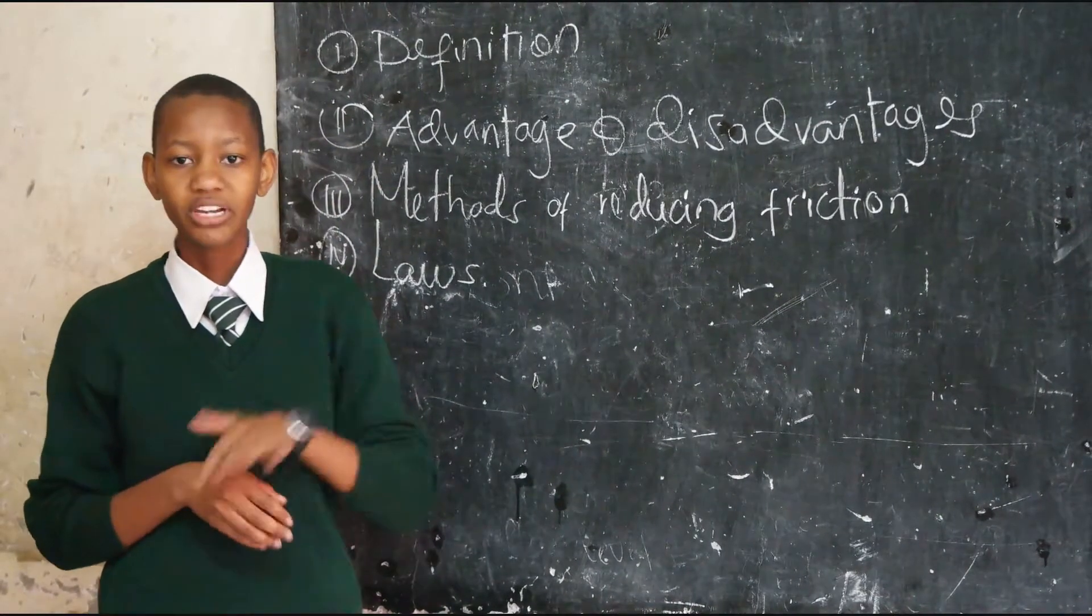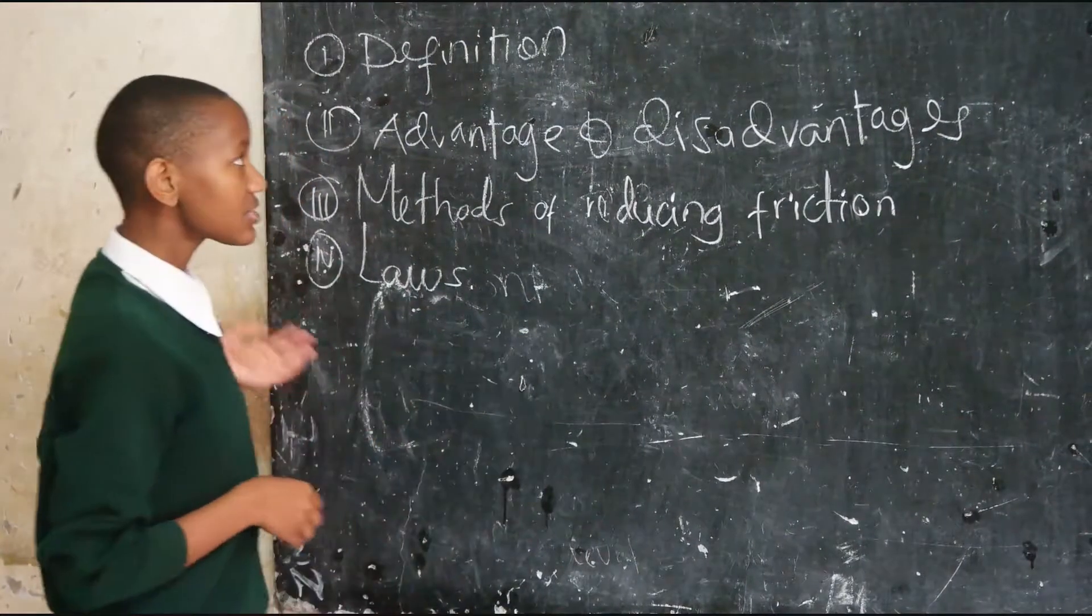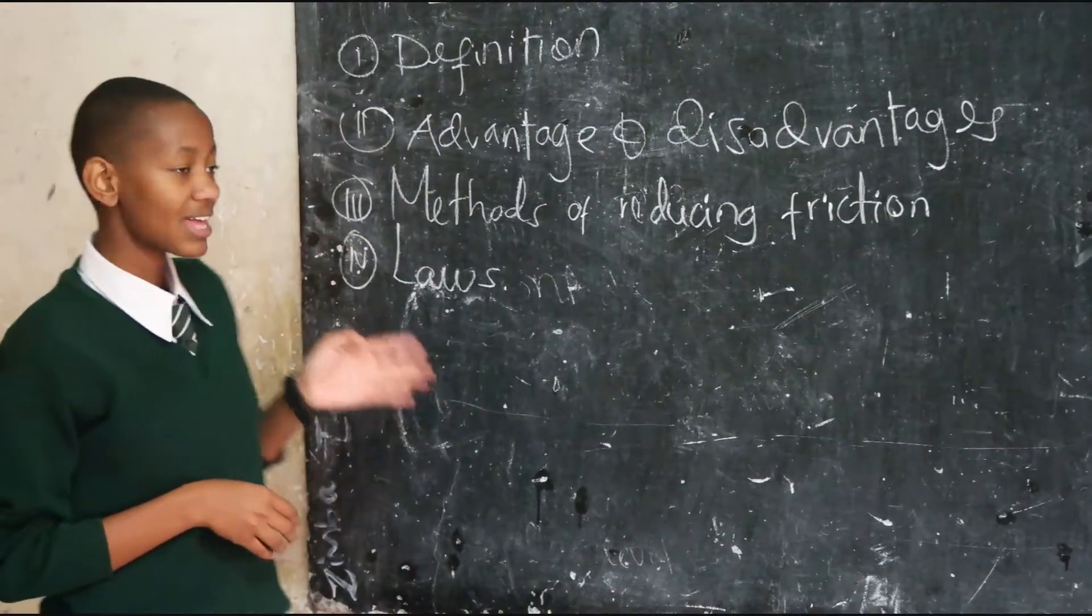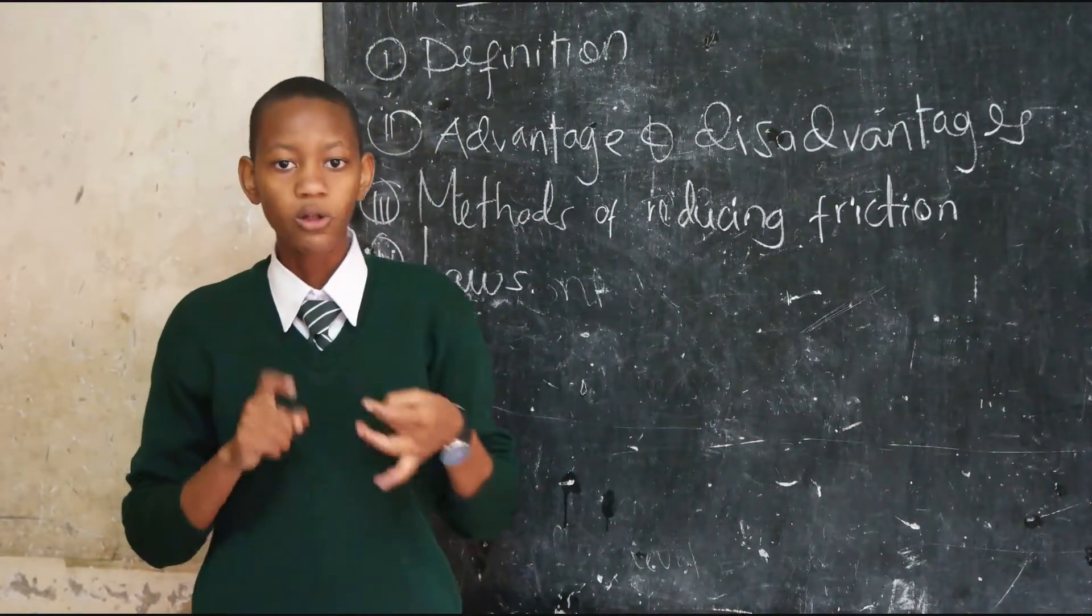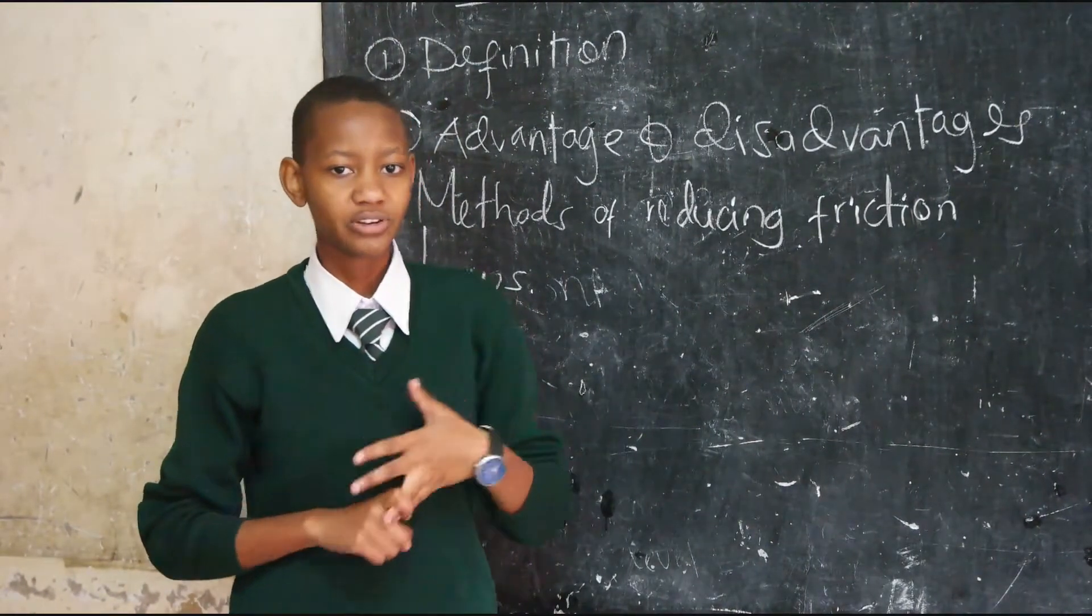Also we can polish the surfaces to prevent friction. There are various laws which guide friction. First, friction depends on the nature of the surface in contact. Also, friction does not depend on the surface area in contact.